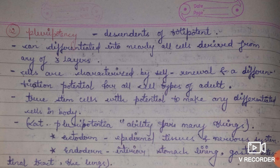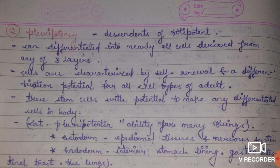Pluripotent cells can give rise to cells of the three germ layers: ectoderm, endoderm, and mesoderm. The ectoderm is the outermost layer, giving rise to epidermal tissues and the nervous system. The endoderm is the innermost layer, giving rise to the stomach lining, gastrointestinal tract, and lungs. The mesoderm is the middle layer, giving rise to muscle cells, bone cells, blood cells, and urogenital cells.